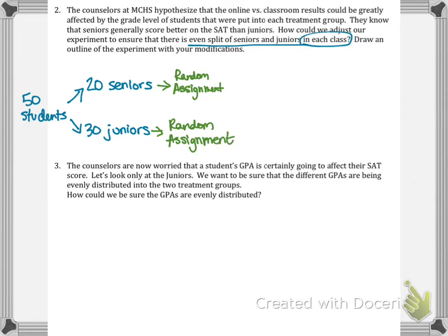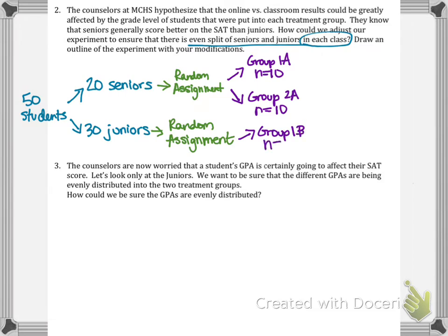I will have group 1A, which will be 10 seniors, and group 2A, which will also be 10 seniors. I'm calling them 1A and 2A because for the juniors I'll have group 1B, which will have 15 juniors, and group 2B, which will have 15 juniors.